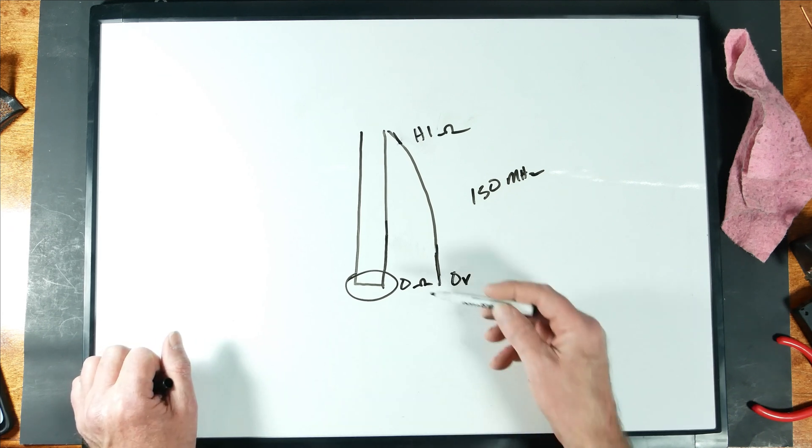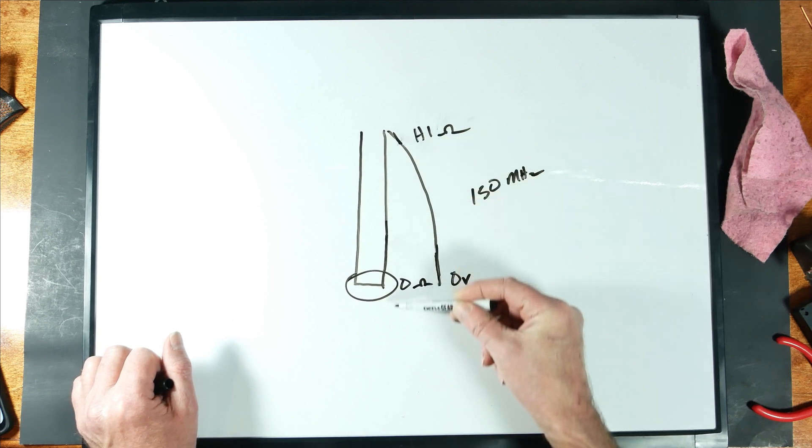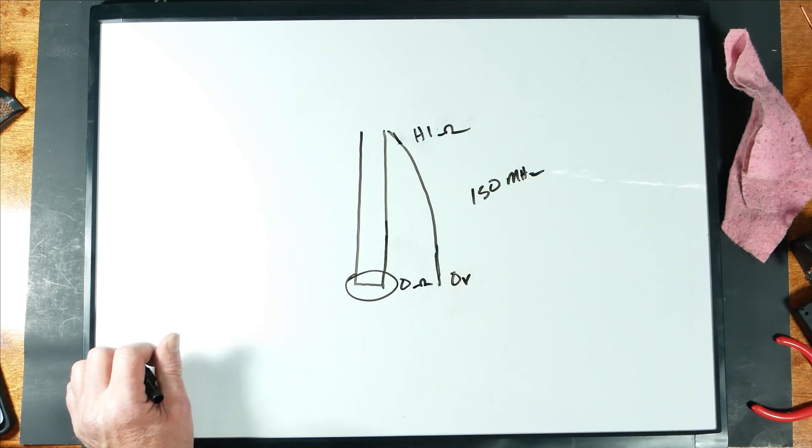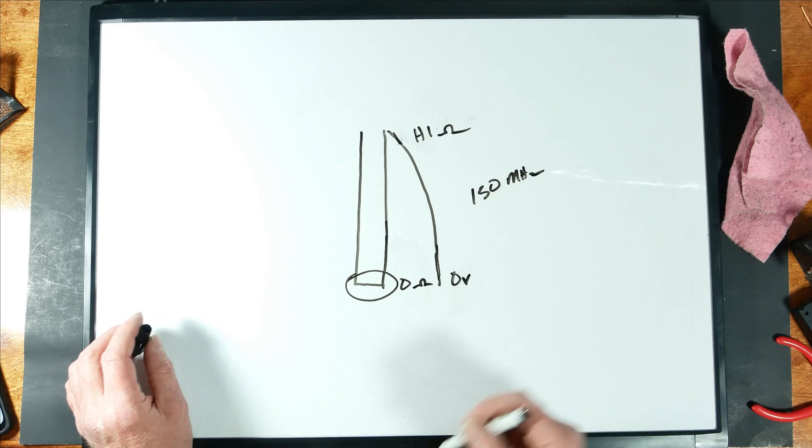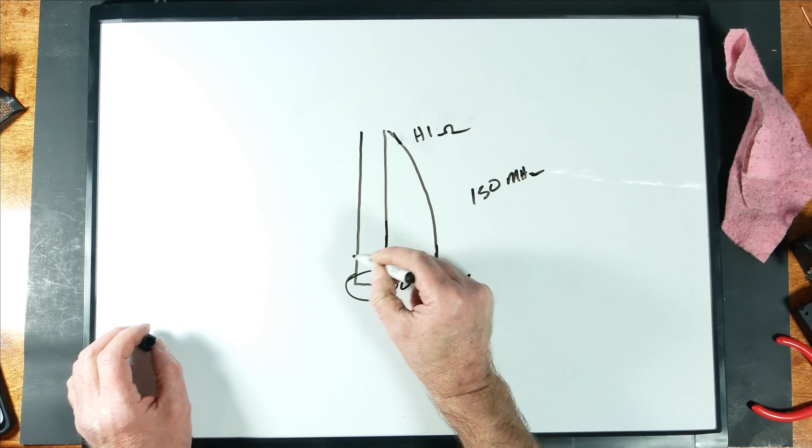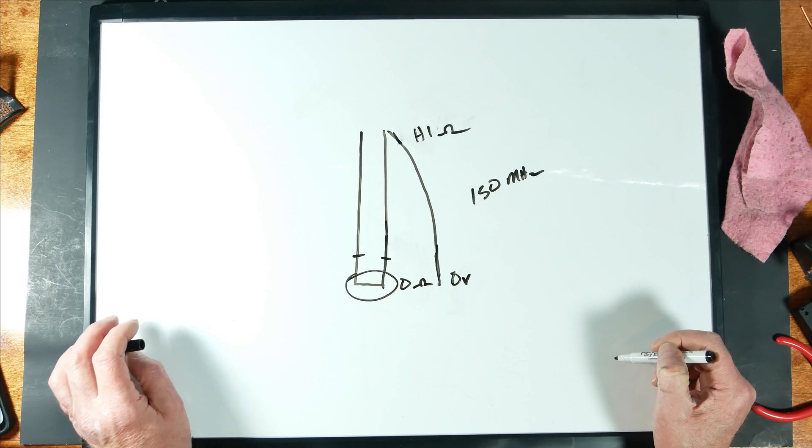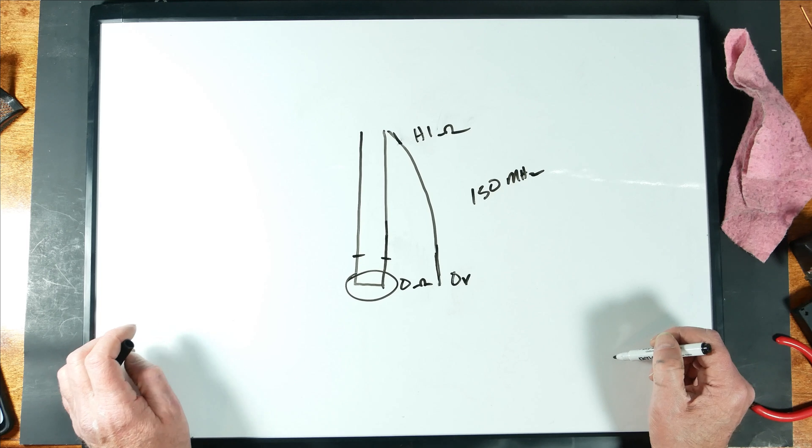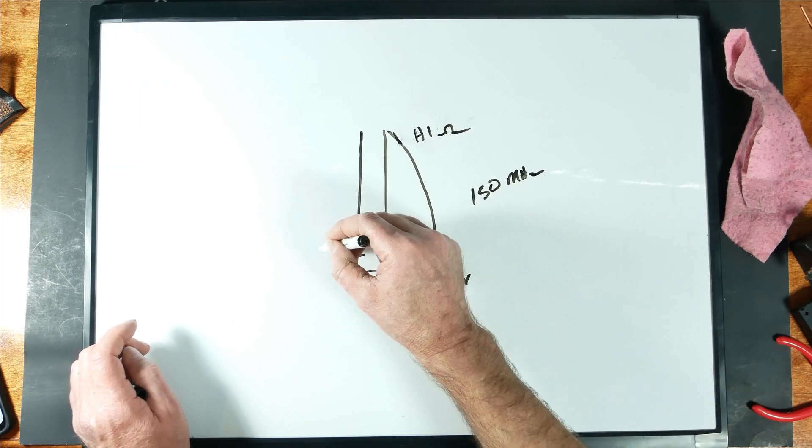So therefore, by moving this feed point up and down, we can change the impedance of the antenna. When we're using a stub in this manner, we're using it as an impedance transformer. This is essentially what we're doing. So it will typically come up here somewhere about right there, and it will pick a point on this stub or impedance transformer that's very close to 50 ohms.